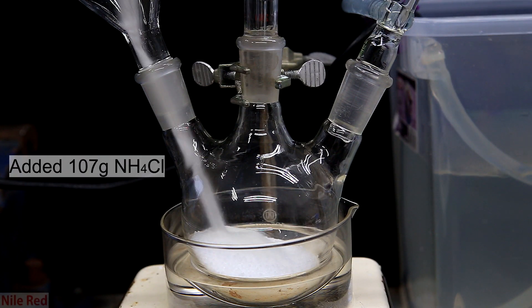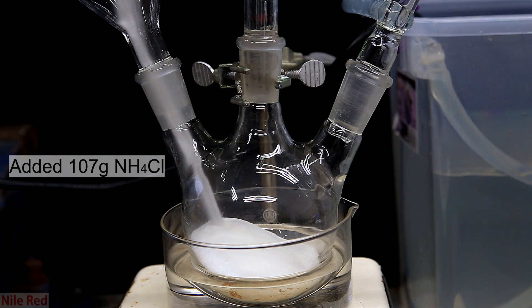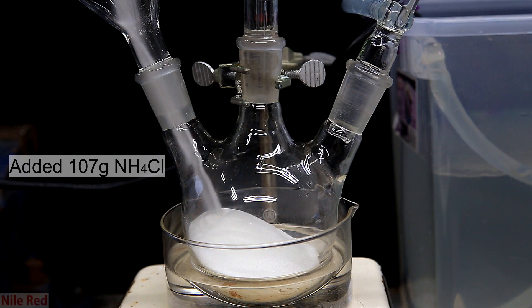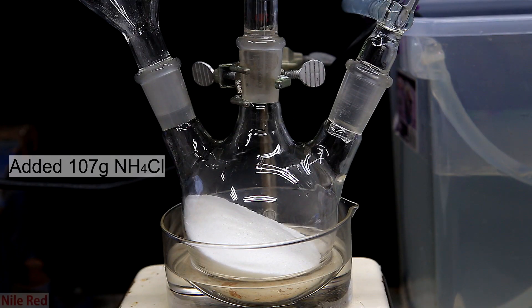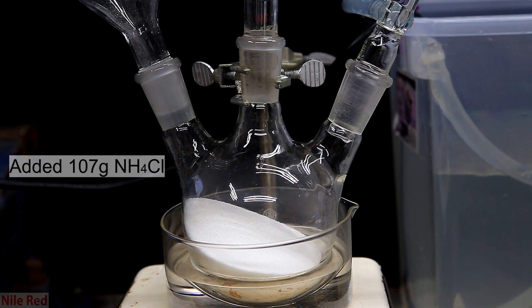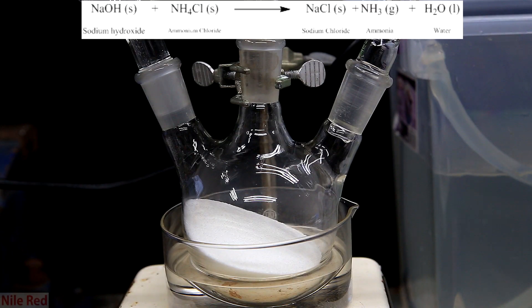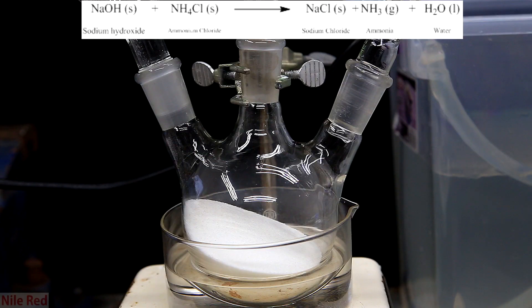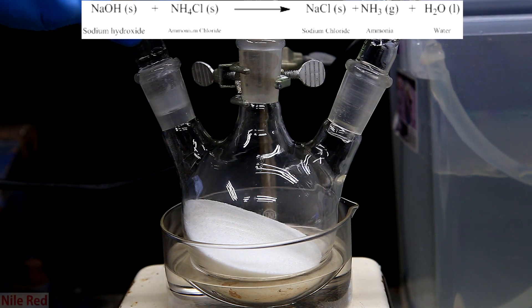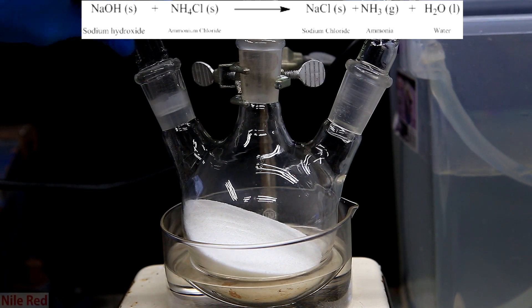Then on top of the sodium hydroxide, I added 107 grams of ammonium chloride. You can really use any ammonium-based salt, and I used ammonium chloride because I had it on hand. The reaction that we hope to be carrying out is shown above. The ammonium chloride should react with the sodium hydroxide to form sodium chloride, ammonia gas, and water.